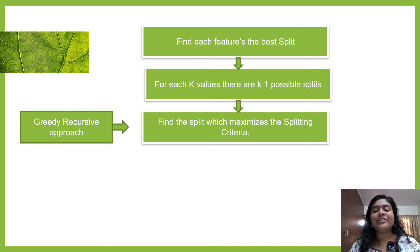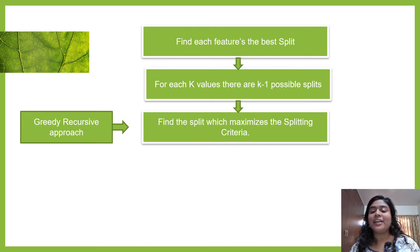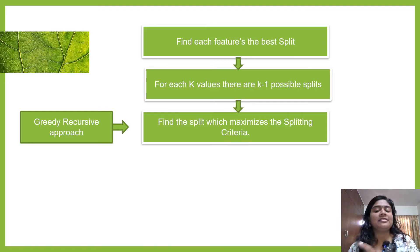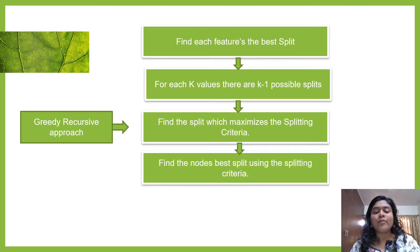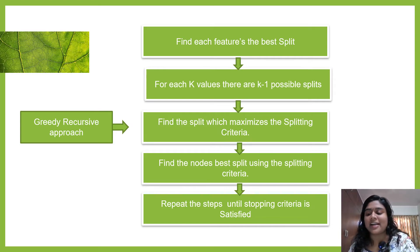For K values there are K minus 1 possible splits. Find the split which maximizes the splitting criteria — in this case your splitting criteria is nothing but the Gini index. Then find the node's best split using the splitting criteria. You repeat these steps until the stopping criteria is satisfied.